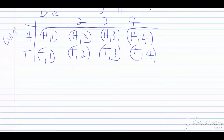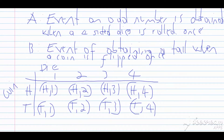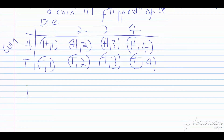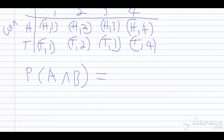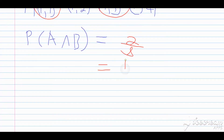Now A is the event that we get an odd number, and B is the event that we get a tail. So let us look at the probability of A and B. We are looking for all the odd numbers that come with tail, so we have tail and one, and tail and three. We have eight outcomes in total, and two of these outcomes have a tail with an odd number, so this gives us two out of eight, which breaks down to a quarter.